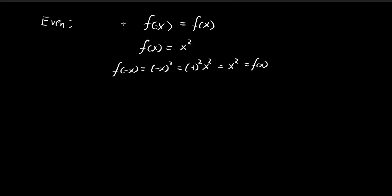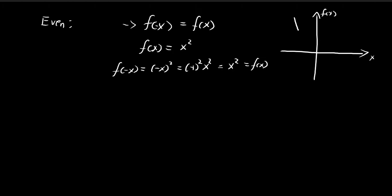So you see that this condition is satisfied. For even functions, these are functions that are symmetrical about the y-axis. Using x² as an example, you can see that the graph is symmetrical about the y-axis. That's what an even function is.